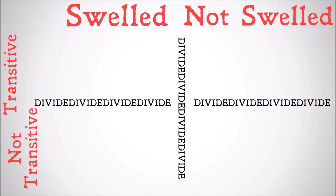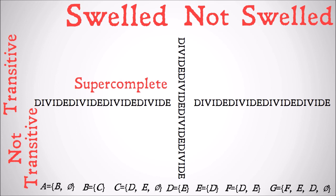So let's take a look. Super complete is where you have both swelled and transitive. We have a group of sets here. Give it a try on your own — where do you think each of these fit in terms of swelled, not swelled, transitive, not transitive?